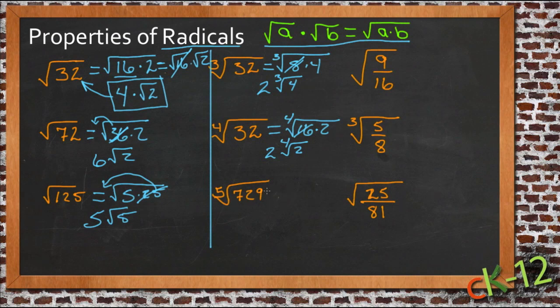And then the 5th root of 729, well 729 I know divides by 3 because 7 plus 2 is 9 plus 2 is 18, and 18 divides by 3.